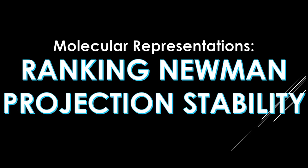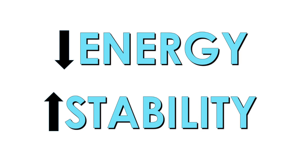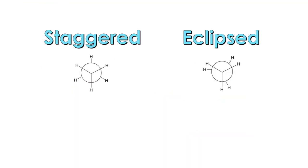Hey guys, it's Lexi and in this video I'm going to be teaching you how to rank the stability of Newman projections. Say you're given a bunch of Newman projections and you're asked to rank them either in order of increasing stability or perhaps in decreasing energy. What you'll want to do is you first need to be able to identify which Newman projections are staggered and which ones are eclipsed.